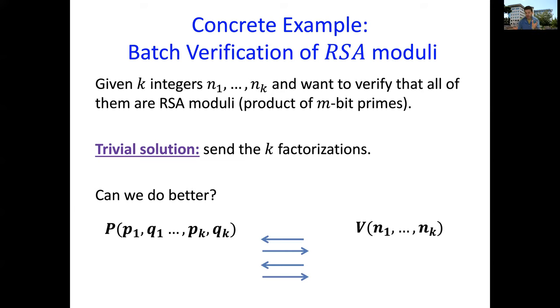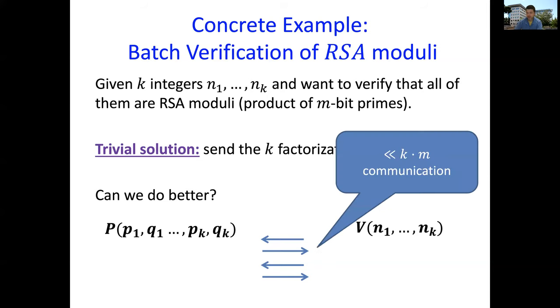We have a verifier who's given the K integers and a prover who is given the factorization. The question is whether the prover can convince the verifier that each and every one of the integers is an RSA moduli and to do so with better than trivial communication, much better than K times N.